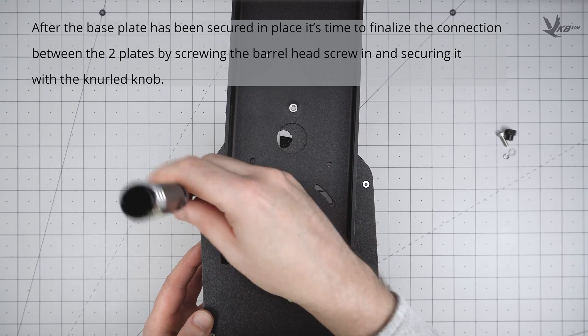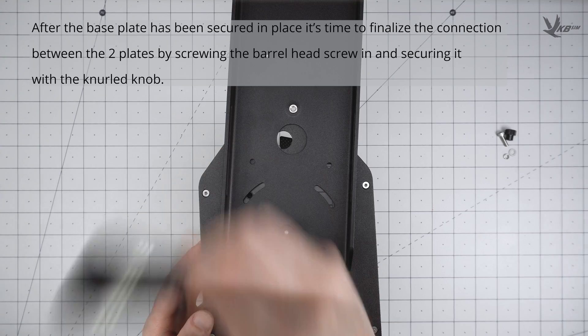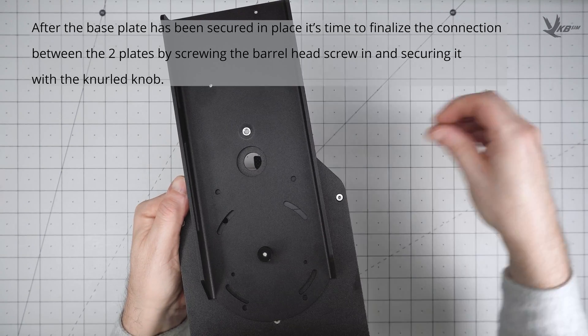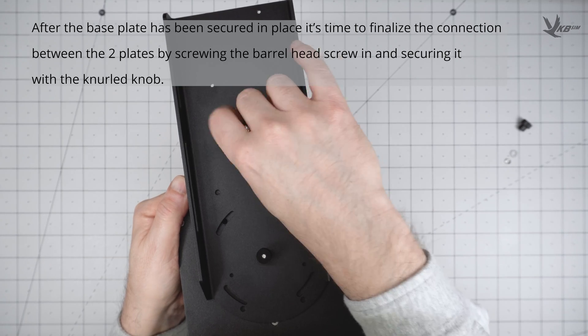After the base plate has been secured in place, let's finish off the securing of the base plates to each other. Notice the threaded insert in the middle of the universal plate. We will be giving this the same treatment as the first plate to plate attachment.